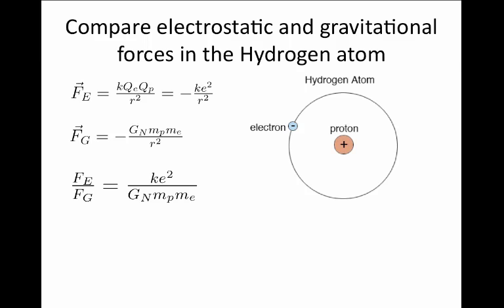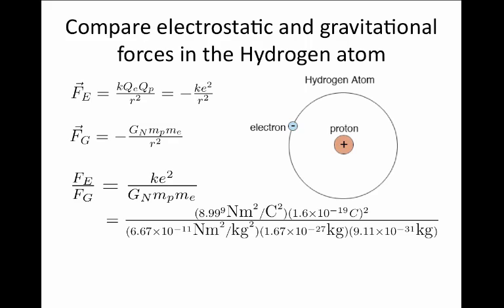Let us now put some numbers in for this calculation. The constant k has a value of 8.99 newton meter squared per coulomb squared, and the electron charge, as I mentioned, is 1.6 times 10 to the minus 19 Coulombs, and we must square that as well.